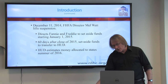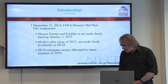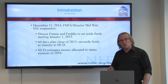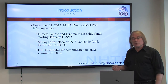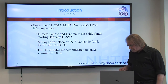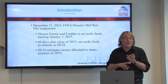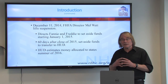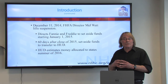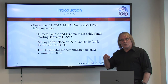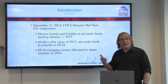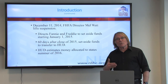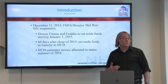Fast forward to December 11, 2014, when Federal Housing Finance Agency Director Mel Watt finally released the hold on that 4.2 basis point assessment on Fannie Mae and Freddie Mac's business. Director Watt directed Fannie Mae and Freddie Mac to set aside these funds beginning January 1, 2015, and told them to transfer whatever assessment they collected throughout calendar year 2015 — within 60 days — over to the Treasury Department, to be designated for HUD, the National Housing Trust Fund, and the Capital Magnet Fund. HUD is estimating the actual money will reach states sometime in the summer of 2016.